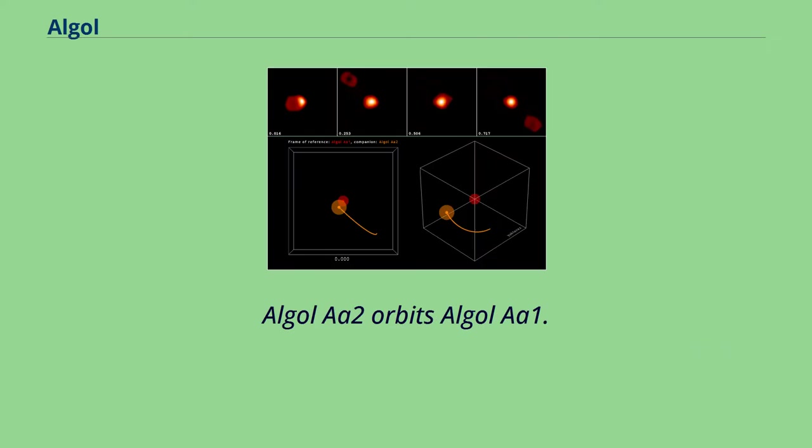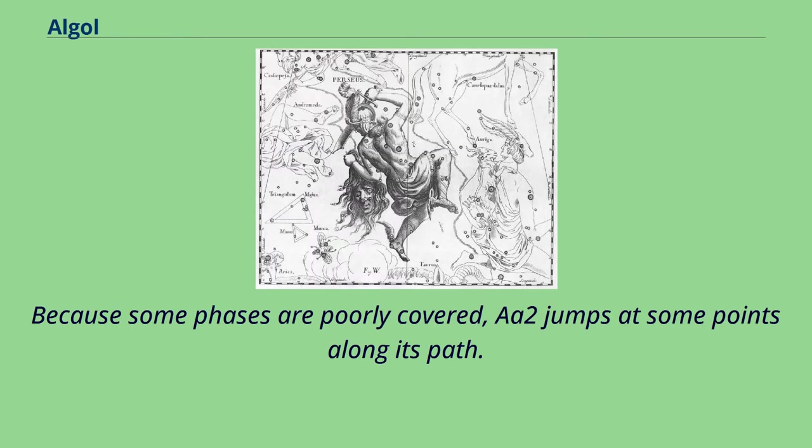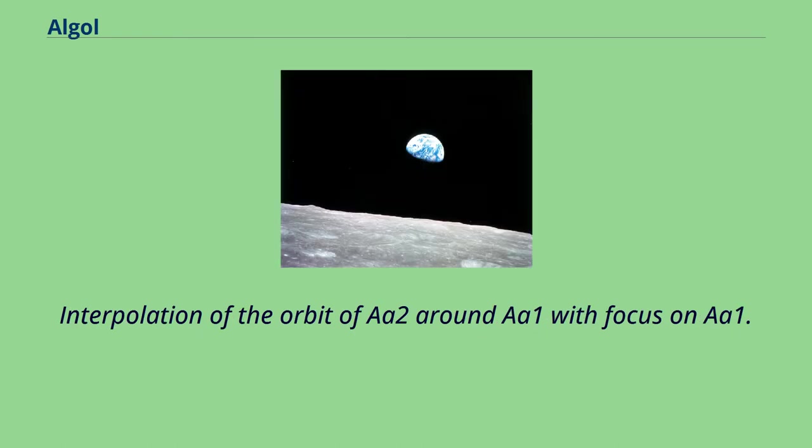Algol A2 orbits Algol A1. This animation was assembled from 55 images of the CHARA interferometer in the near-infrared H-band, sorted according to orbital phase. Because some phases are poorly covered, A2 jumps at some points along its path. Interpolation of the orbit of A2 around A1 with focus on A1.